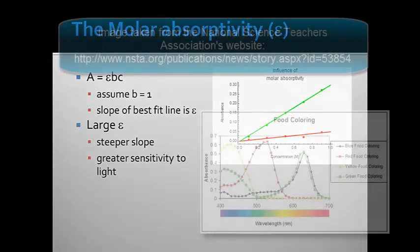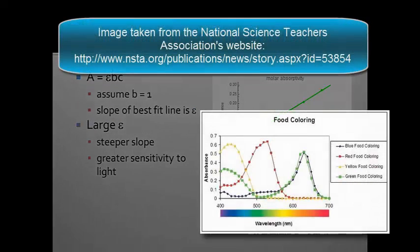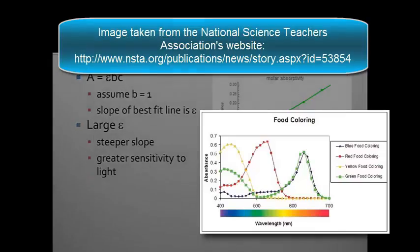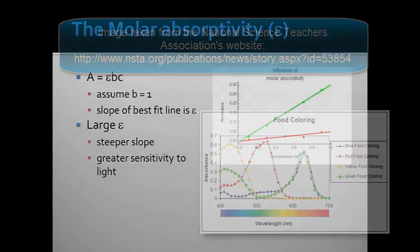The molar absorptivity of a dye is dependent on the various wavelengths, and we can see in this figure called a visible spectrum that different food colorings have different intensities at the various wavelengths. The peak intensity is called the lambda max, which is a quantity that helps us identify various dyes or substances that absorb in the visible spectrum.